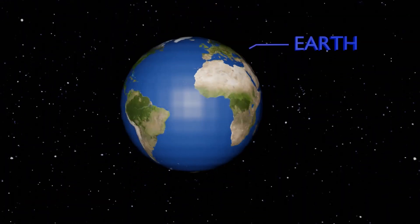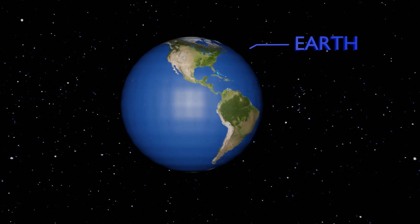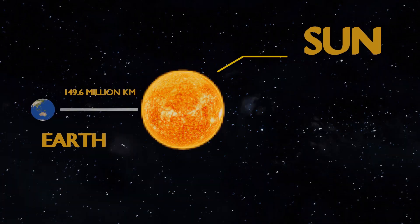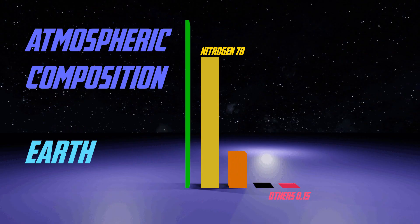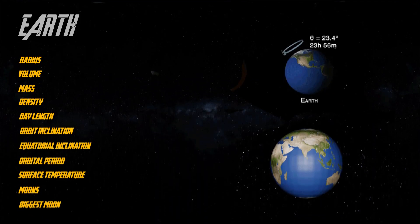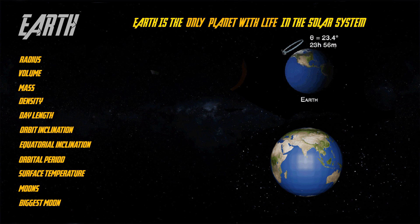Earth is the only planet with life in the solar system. It is 149.6 million kilometers from the Sun. Its atmosphere is mainly made up of nitrogen and oxygen. Earth is home to more than one trillion species.